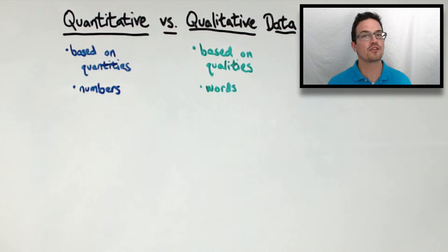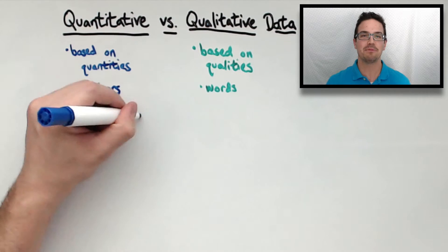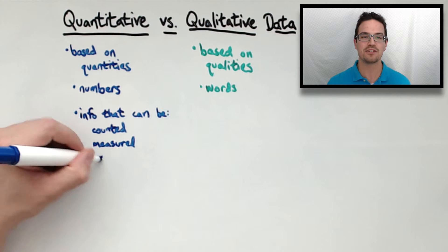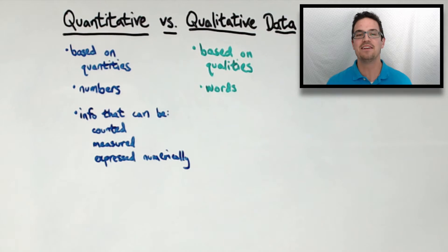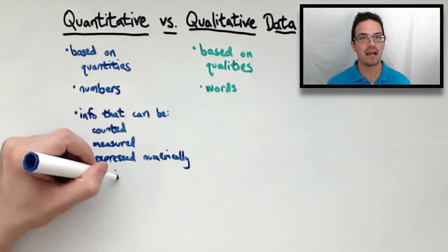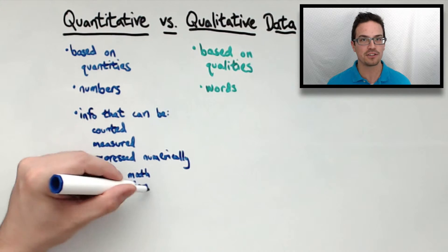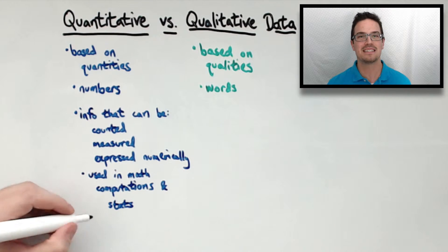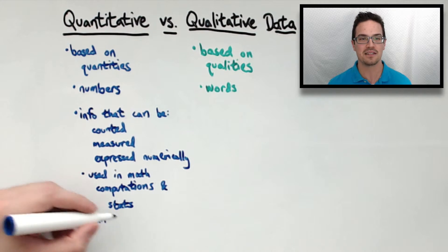First, we're going to start with quantitative data. This is basically any information that can be counted, measured, or expressed numerically. This data can be used in mathematical computations as well as statistical analyses.